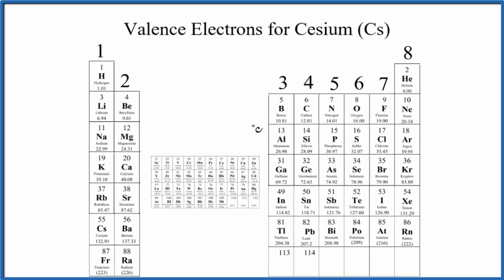There are two main ways to find the number of valence electrons for cesium, that's Cs. The first way is we can look at the periodic table organized in terms of the valence electrons in each group.